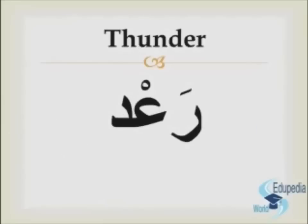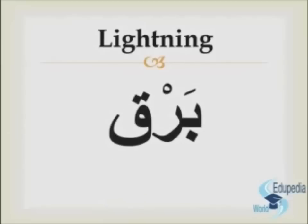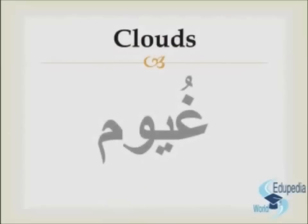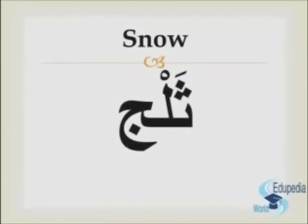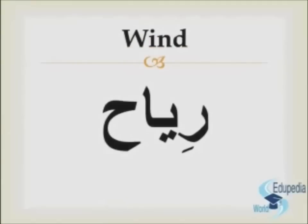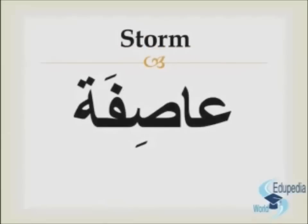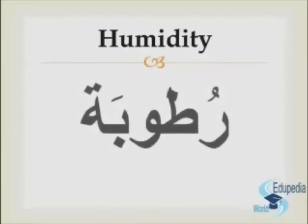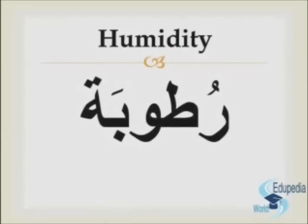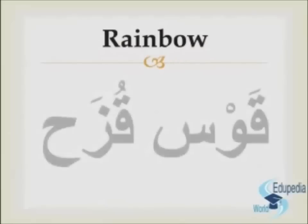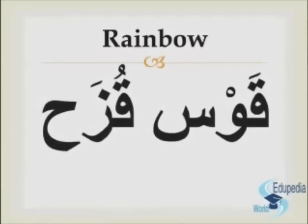So the words are: رعد (thunder)، برق (lightning)، غيوم (clouds)، ثلج (snow)، رياح (wind)، عاصفة (storm)، رطوبة (humidity)، قوس قزح (rainbow).